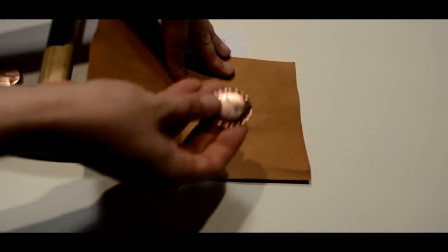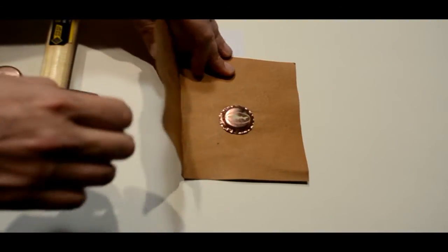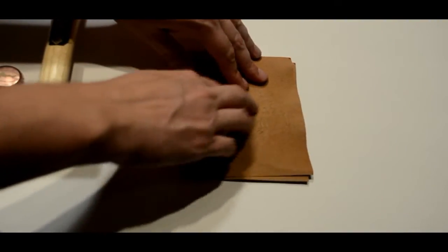Next, place the bottle cap in the center of the folded cardboard. Fold the cardboard over and get a feeling for where the bottle cap is centered to begin striking the cardboard in the center in a circular motion.